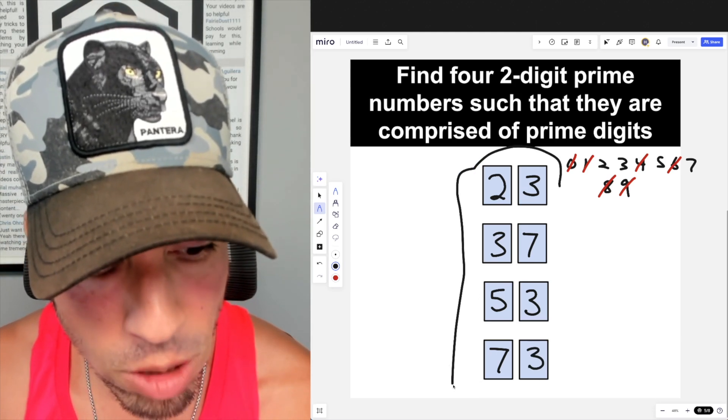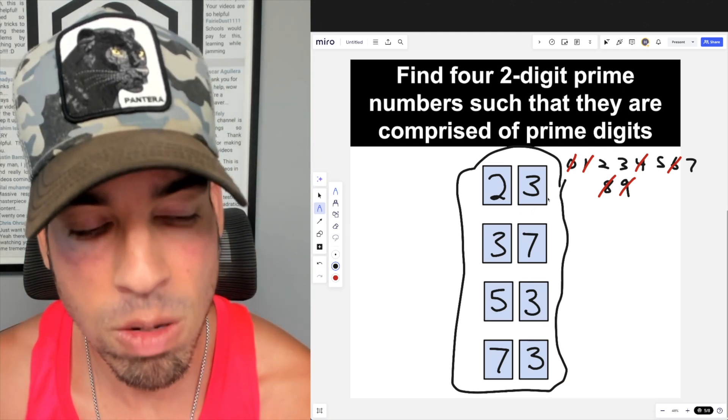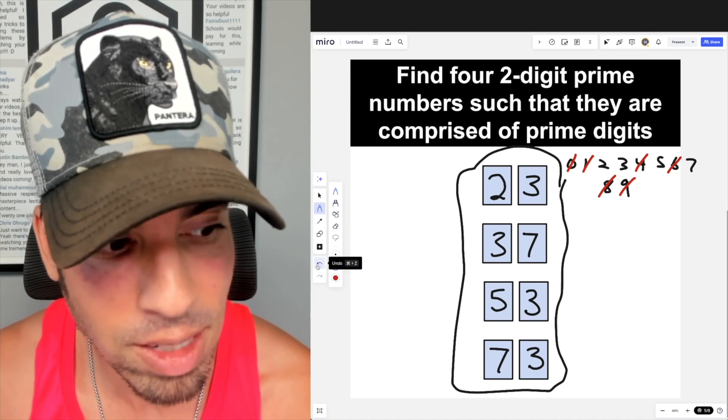Those are our four two-digit prime numbers such that they are comprised of prime digits. That's how you do it. Done!